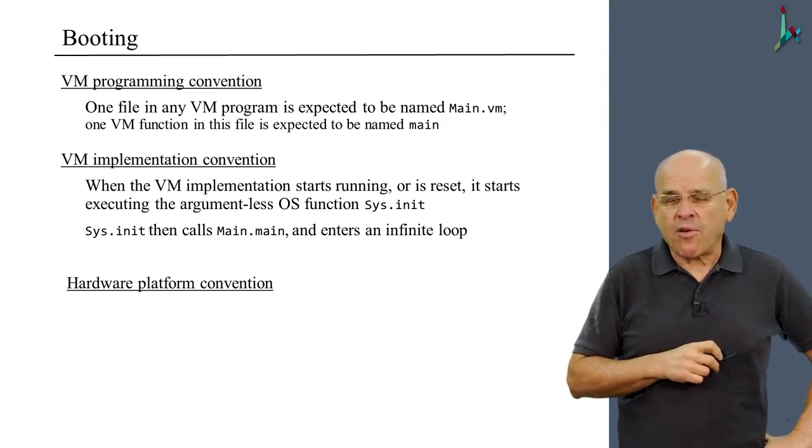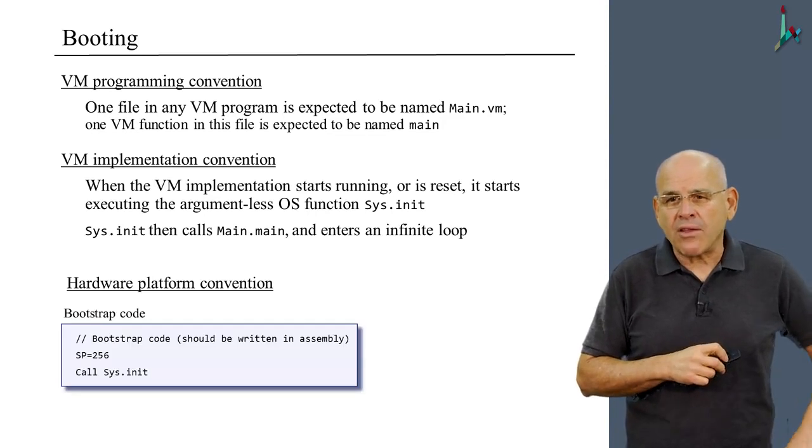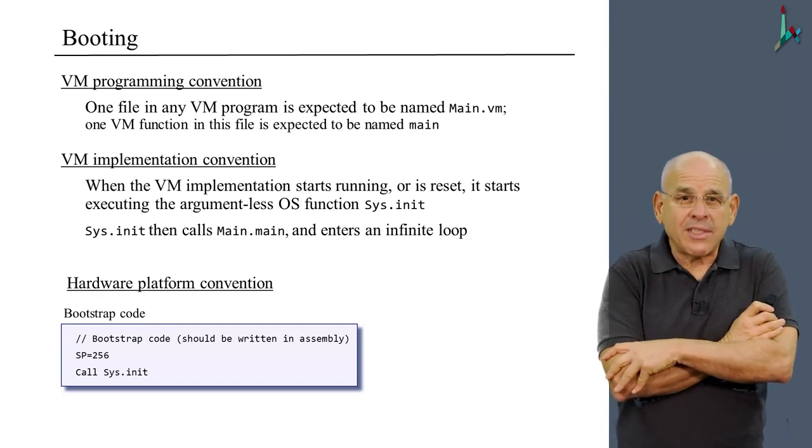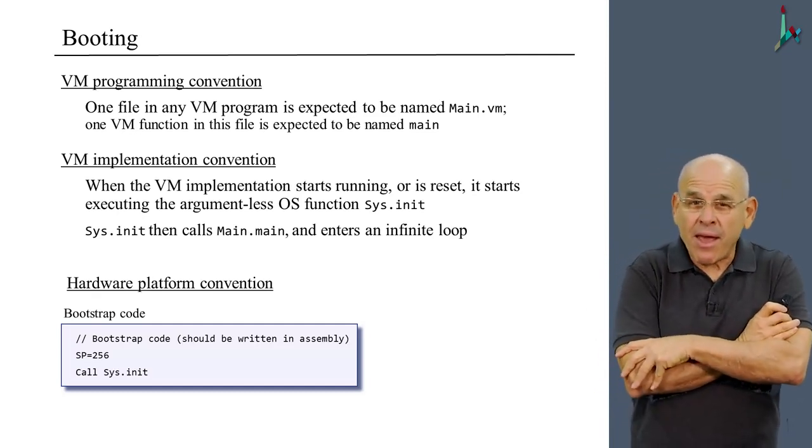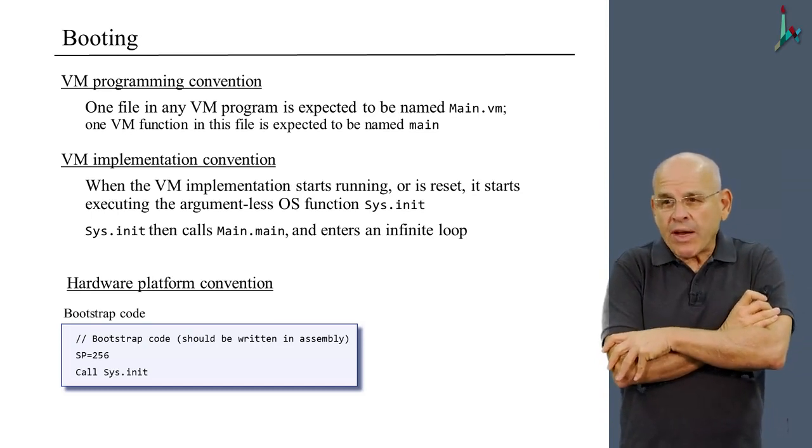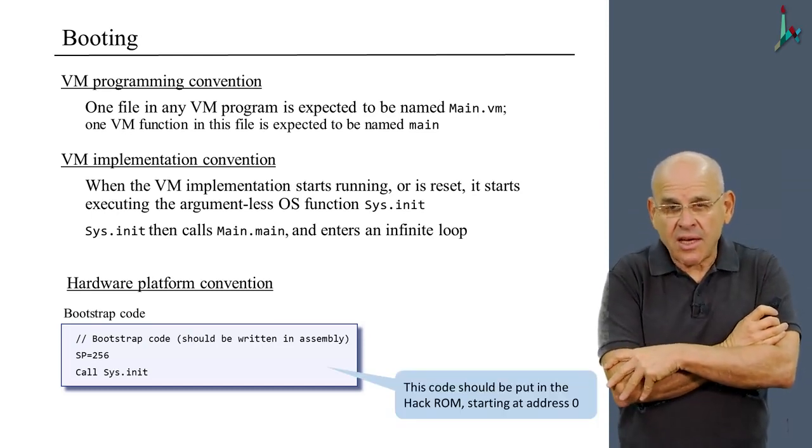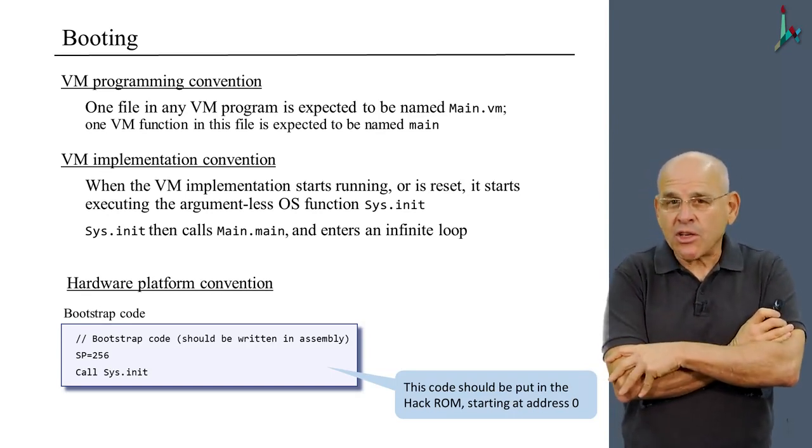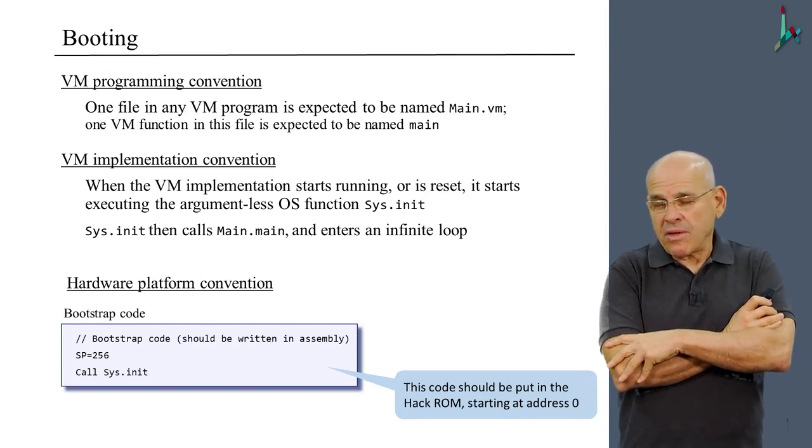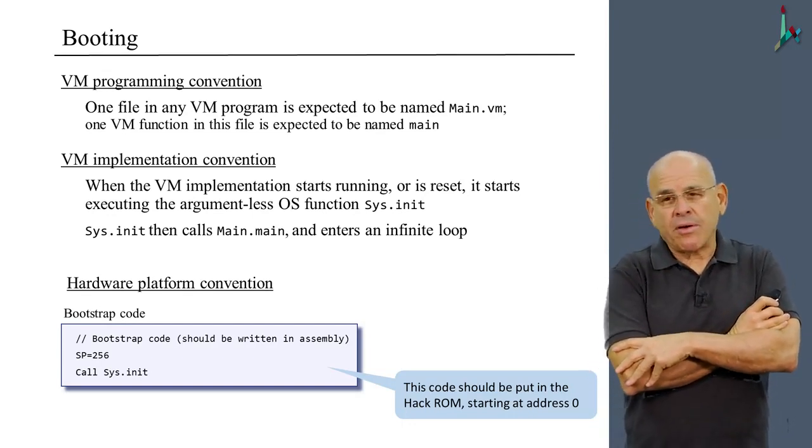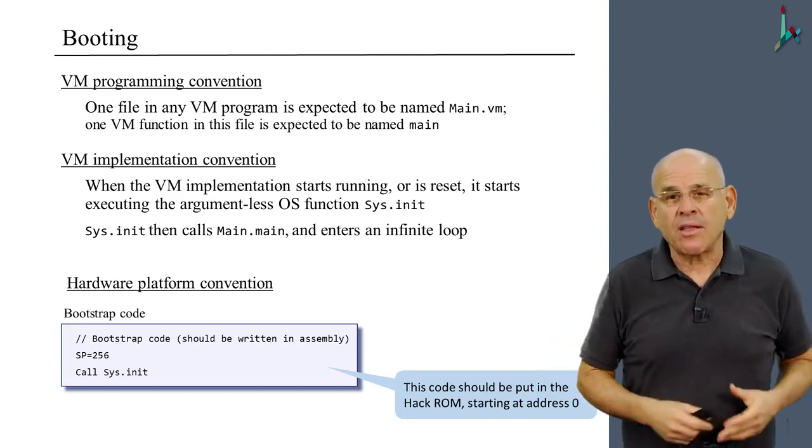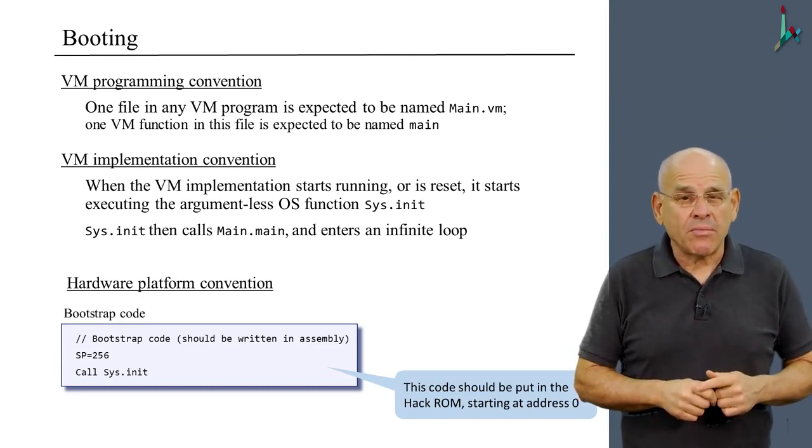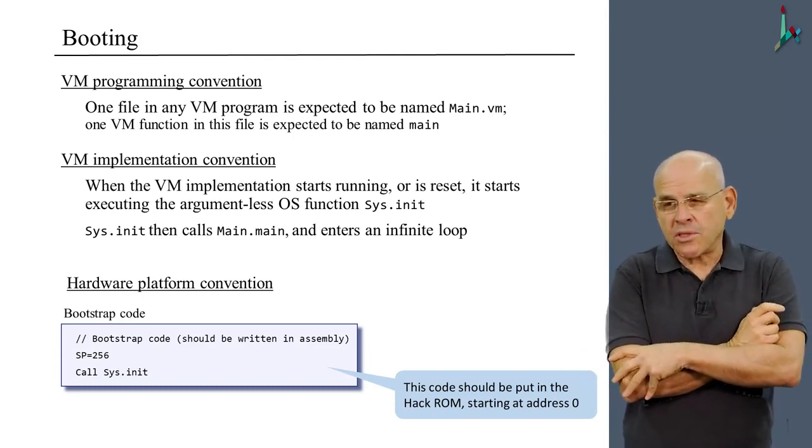Finally, we need some hardware platform convention to comply to. That is what is known as the bootstrap code. We have to somehow call sys.init so sys.init will be able to call main.main. We request that the code that you see here will be stored in the computer's instruction memory beginning in address zero. Because the computer that we built, the hack computer, is programmed to start executing the program which is stored in the instruction memory, beginning with address zero.